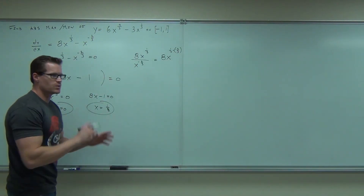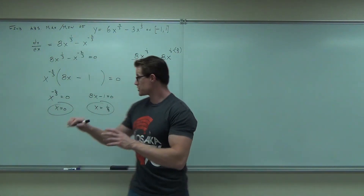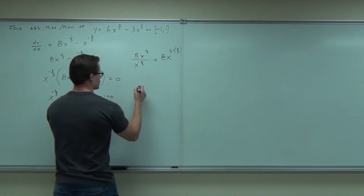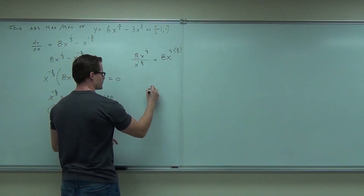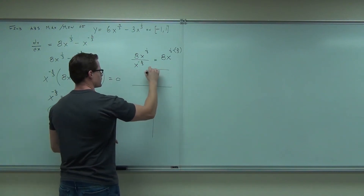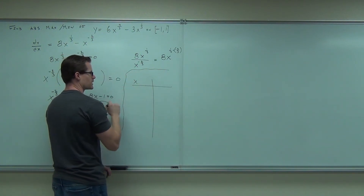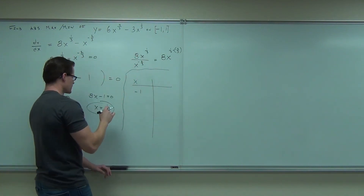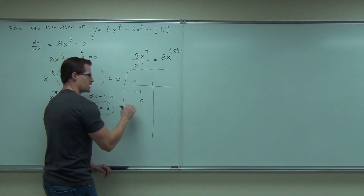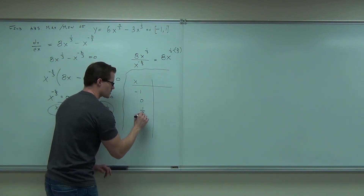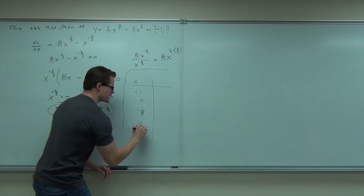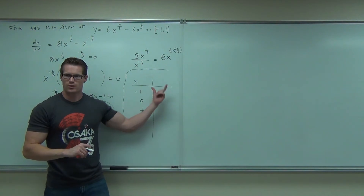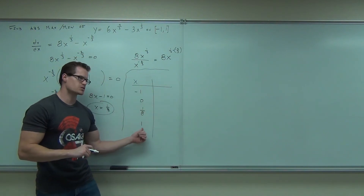Now what do we do after that? Plug the critical numbers into the original function. These two: x equals zero and x equals one-eighth. And what else? Our endpoints. So we're plugging in negative one as an endpoint, zero as a critical number, one-eighth as a critical number, and one as the other endpoint. Whichever value is biggest is your absolute max; whichever is smallest is your absolute min. These are the places where they occur.